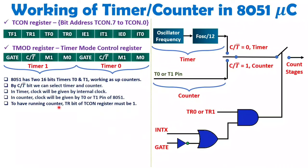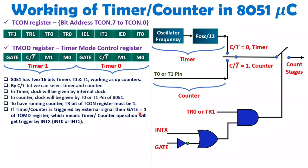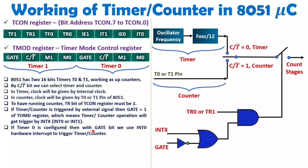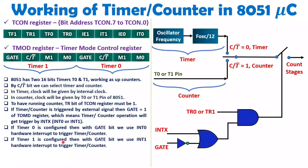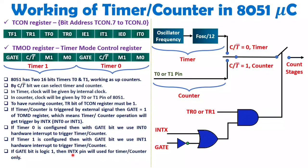To run the counter, first set the TR bit to 1. Then decide whether to use the gate or not. If using the gate, set the gate bit to 1 inside T-Mode, then give the start count signal on the INTX terminal — INT0 for Timer 0, INT1 for Timer 1. If Timer 0 is configured with gate bit set, INT0 acts as a hardware interrupt to trigger the timer. If Timer 1 is configured, INT1 is used. If gate bit is logic 0, INT0 and INT1 remain available for other interrupts with the 8051.